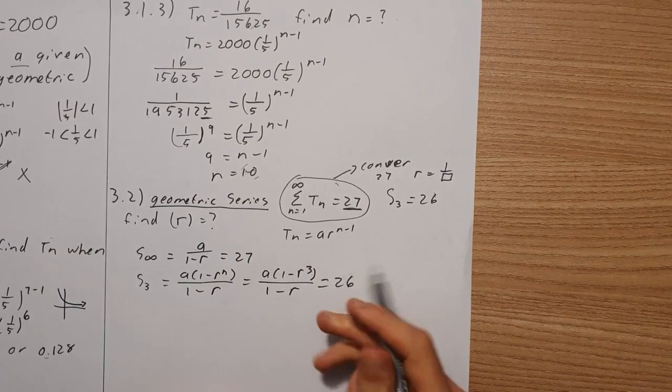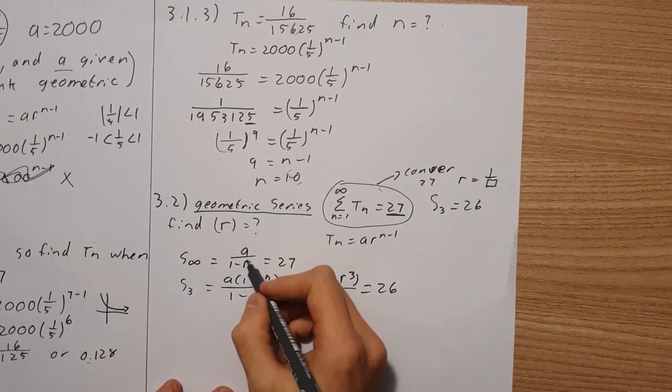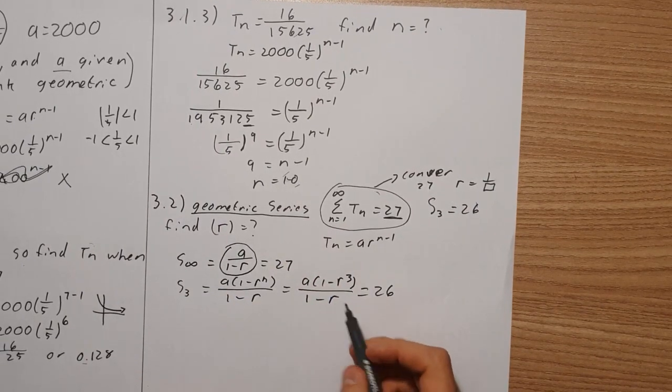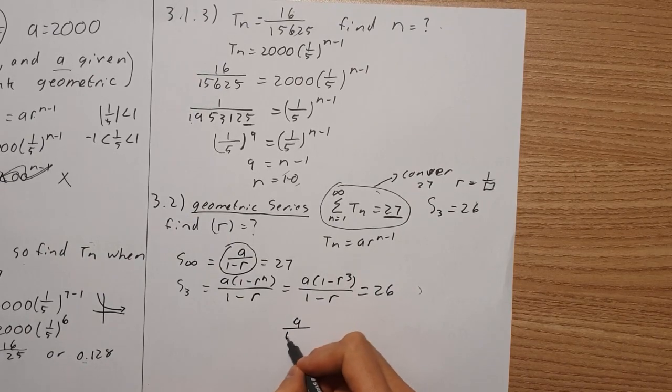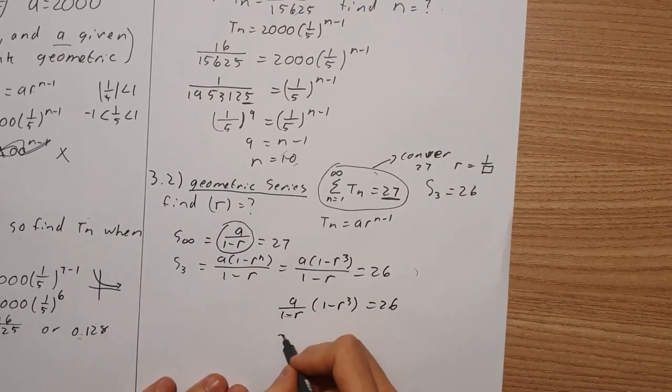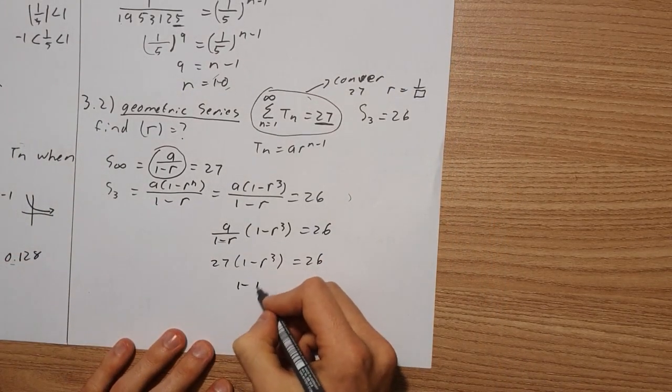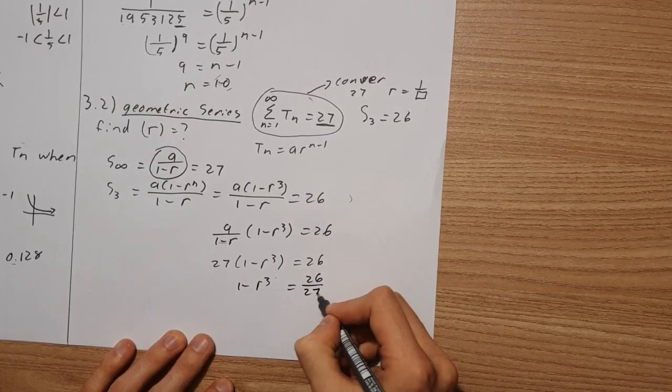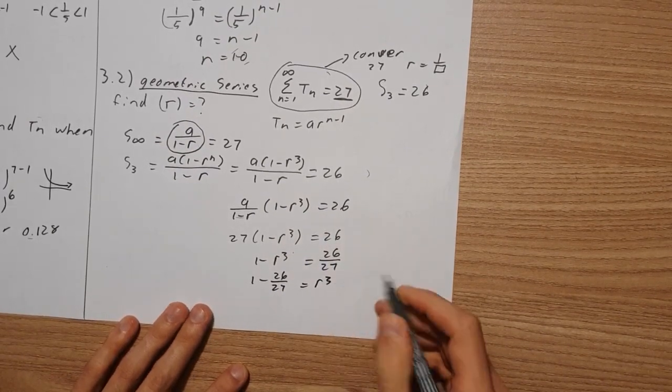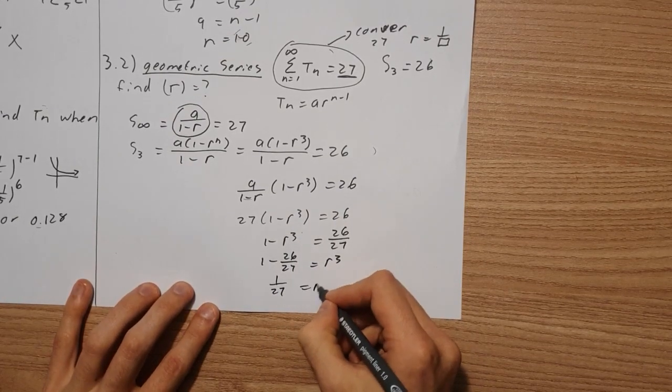Two equations, two unknowns, so we have to make one variable the subject. Now you can see we need to find r. But what you can notice here is we have a over 1 minus r. So if I rewrite this at the bottom, I can write it as a over 1 minus r times 1 minus r cubed equals 26. This is just equal to 27. So I have 27 times 1 minus r cubed equals 26. So if I now solve this, I'll have 1 minus r cubed equals 26 over 27. If I rearrange this, I'm going to end up with 1 minus 26 over 27 equals r cubed. If you work this out, you're going to end up with 1 over 27 equals r cubed.